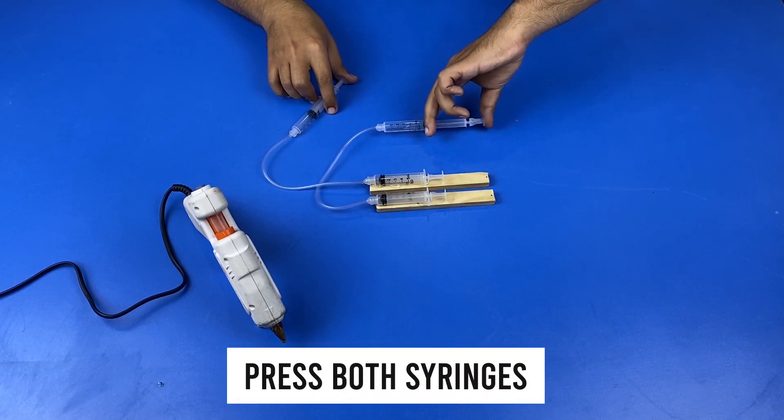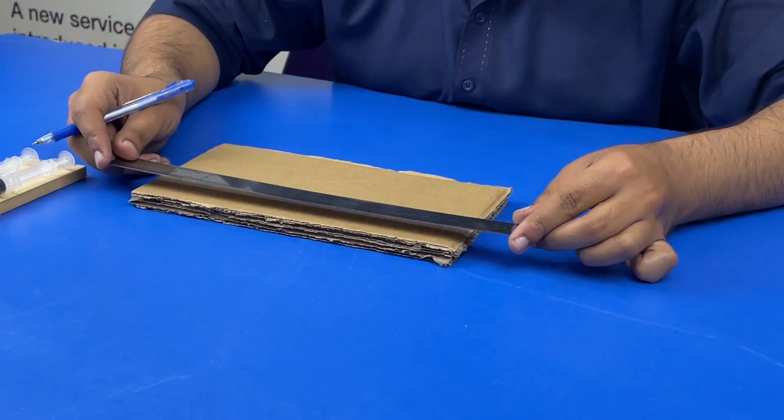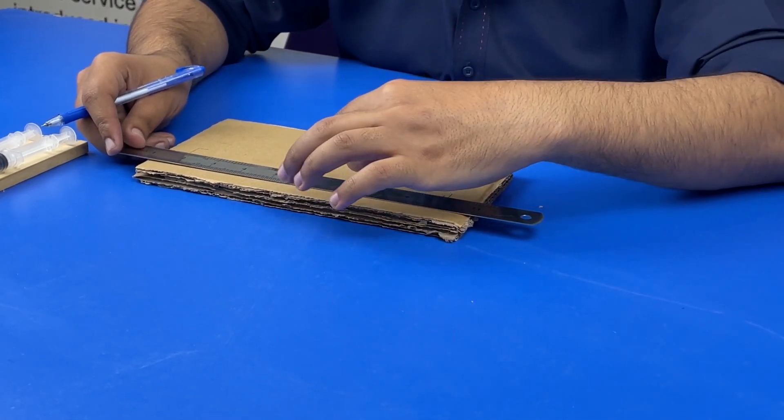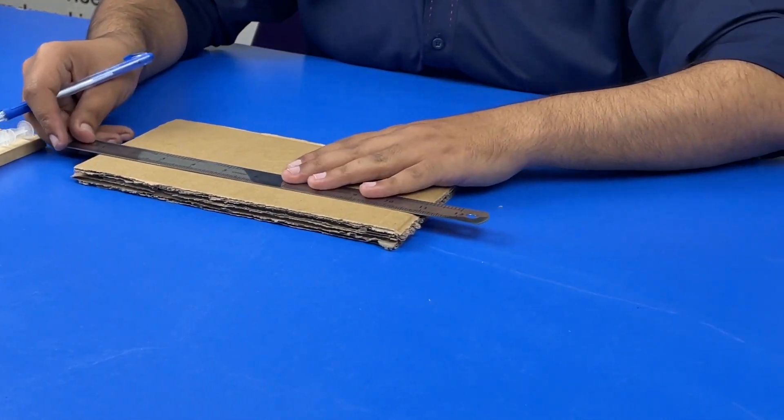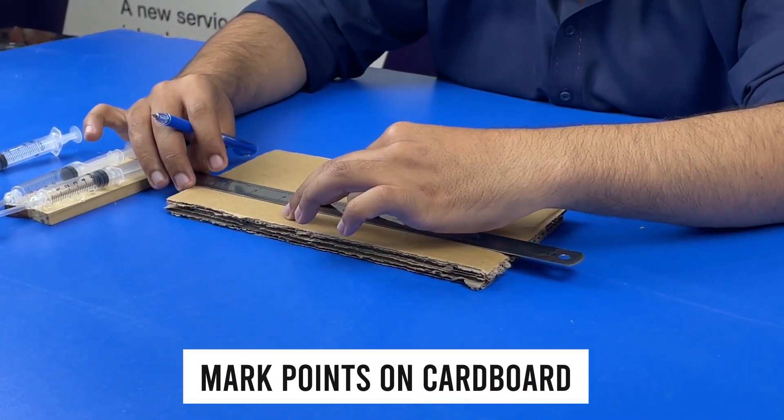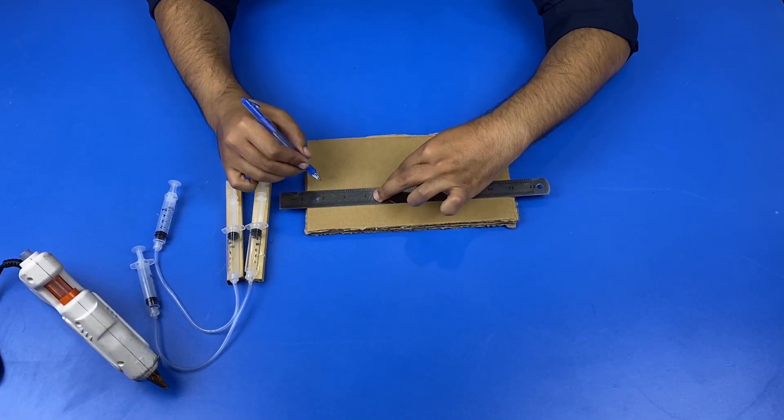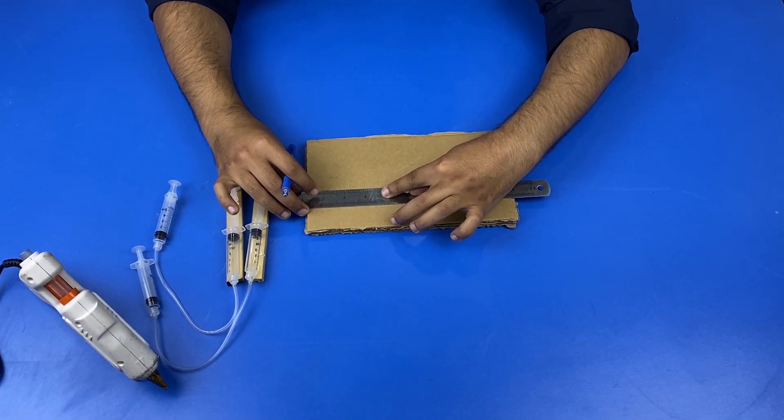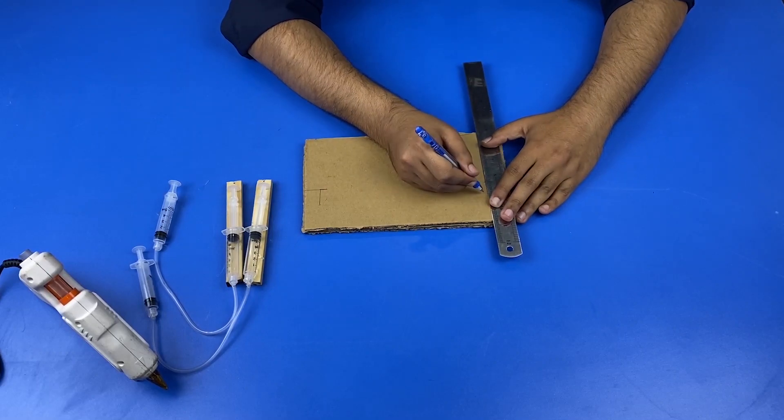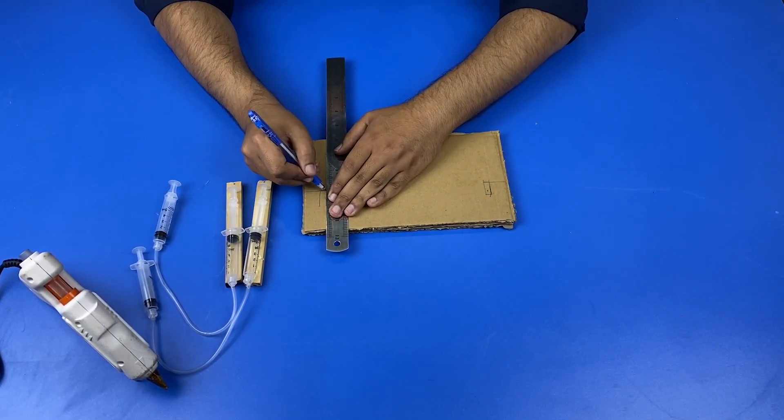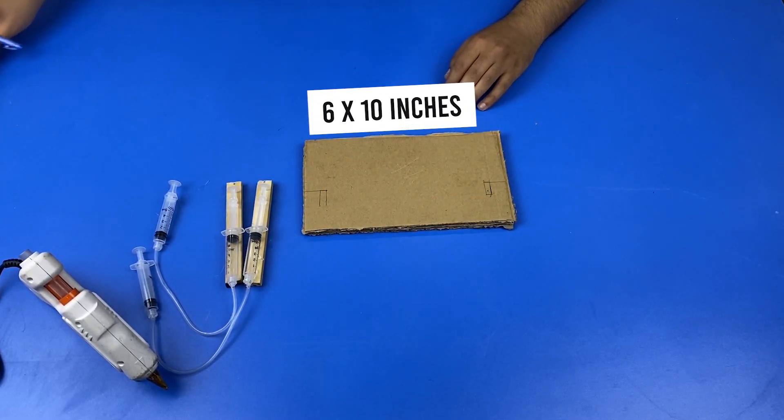The syringes are working perfectly. Now take a scale and pen and mark the points on cardboard, leaving one inch gap from the edges. The cardboard size is 6 by 10 inches.